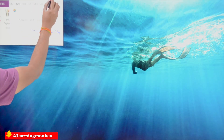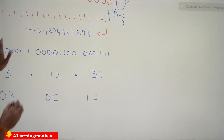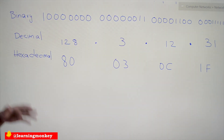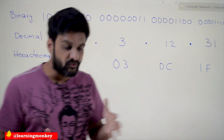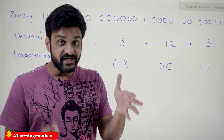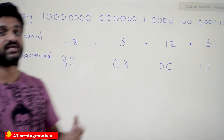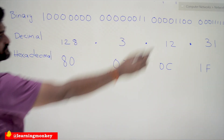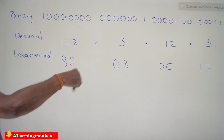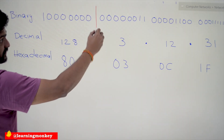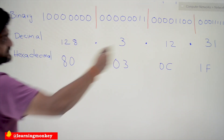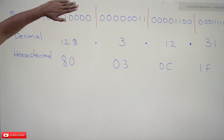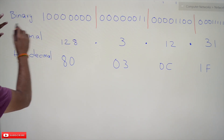Let's understand how IP addresses can be represented with 32 bits. What they have done is divide these 32 bits into four groups with 8 bits each. Each group has 8 bits and can be uniquely identified. So the entire 32 bits is split into 4 groups, each consisting of 8 bits.